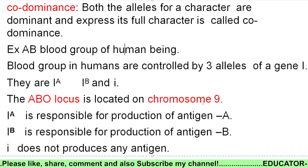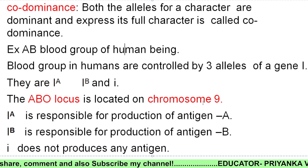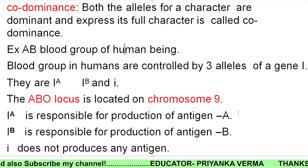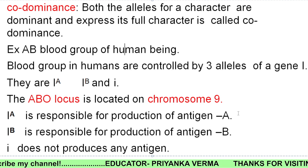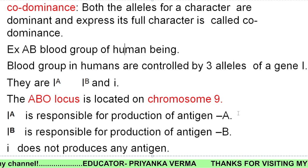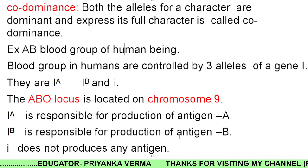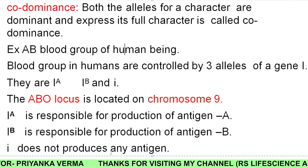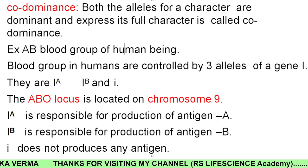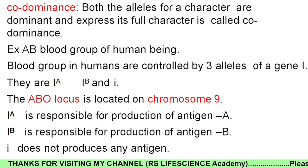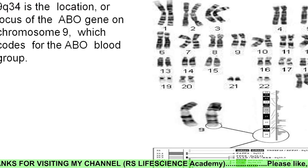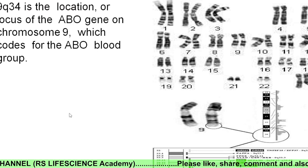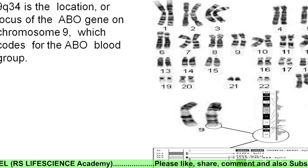Scientists have told us about its discovery. Iᴬ is responsible for antigen A. Iᴮ is responsible for antigen B. You can see this — it is located on chromosome number 9, where our blood group system is present.